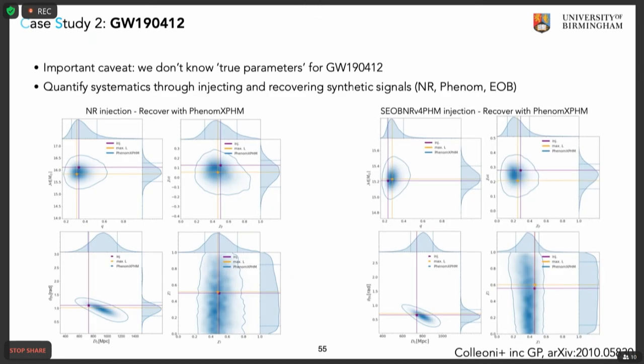Obviously, if you run on a true event, we don't actually know what the true parameters are — it's an unknown source, and we don't know which of the waveform models is necessarily correct.